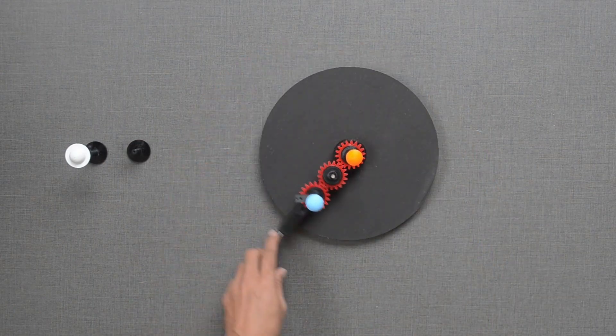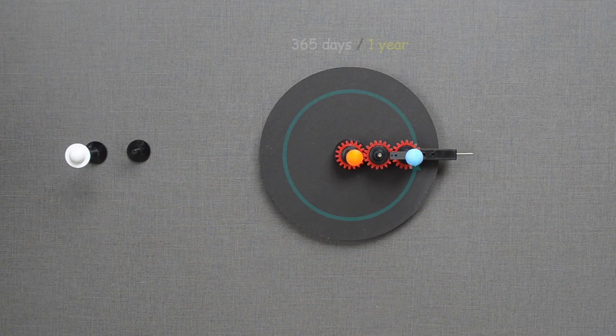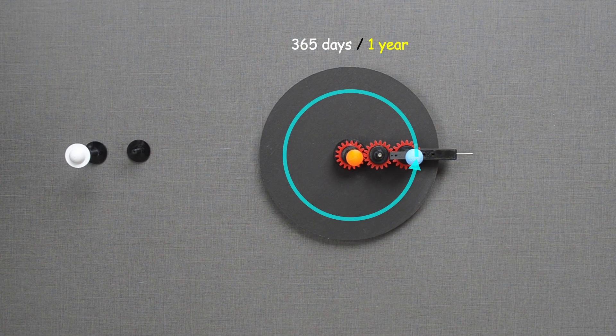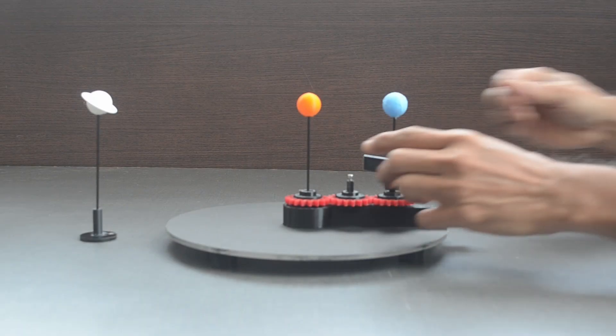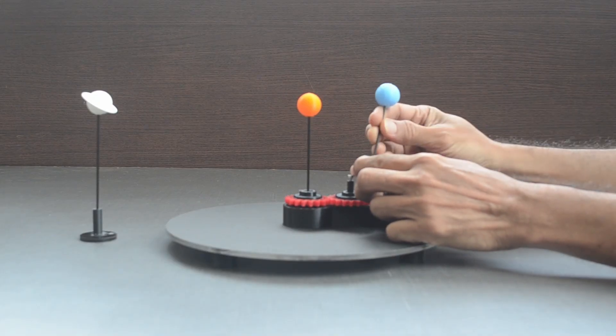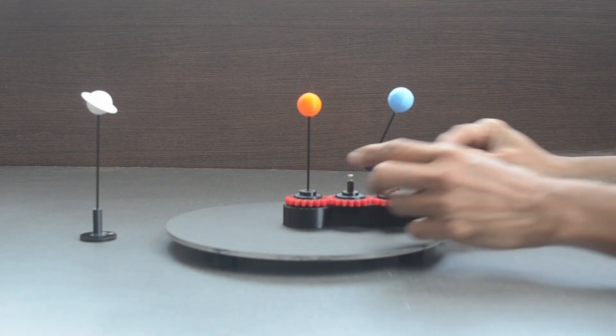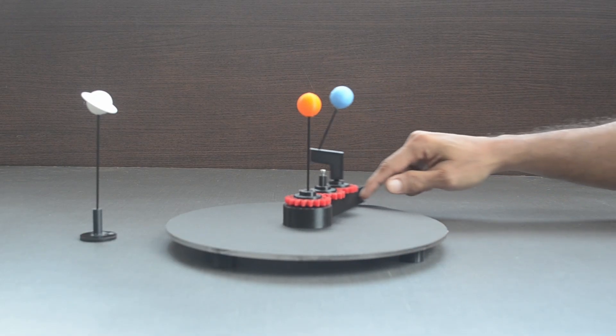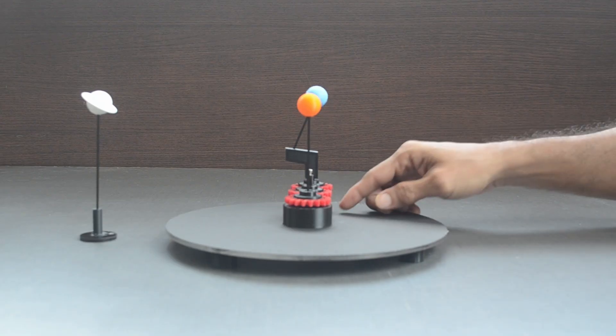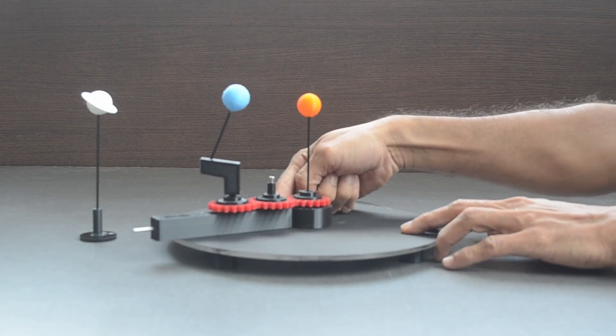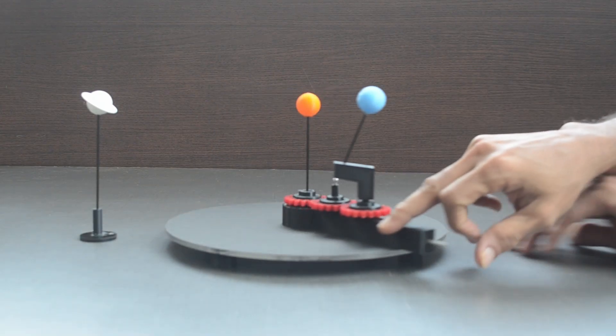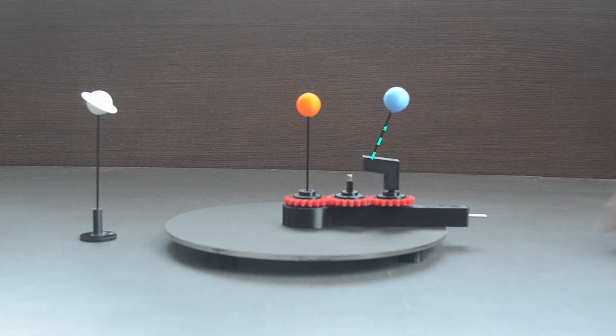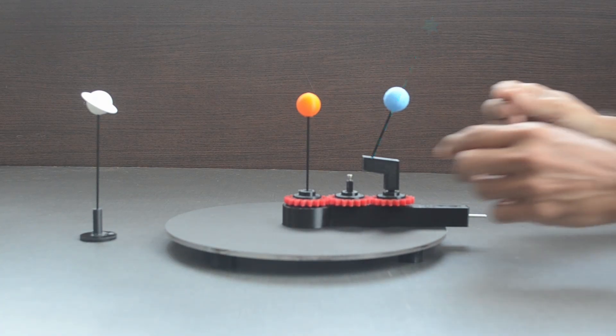Earth takes 365 days or one year to complete one revolution around the sun. During this period, its tilted axis always points at the same location in the sky, popularly known as North Celestial Pole.